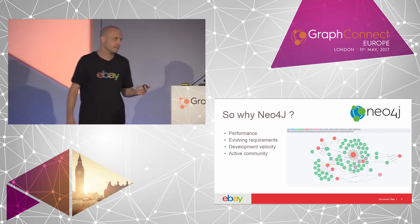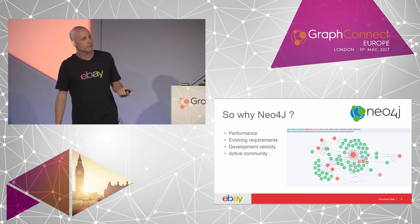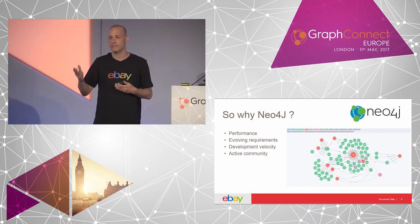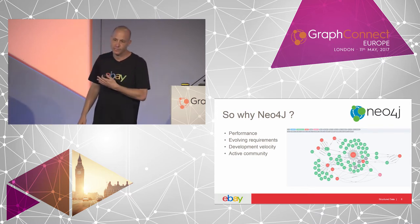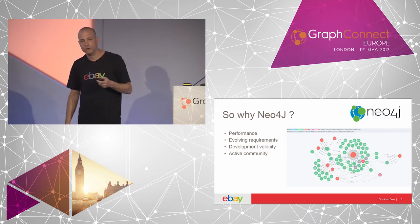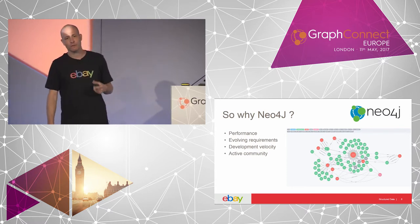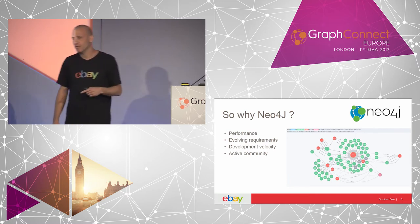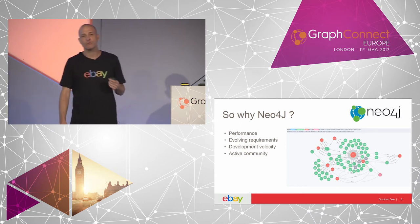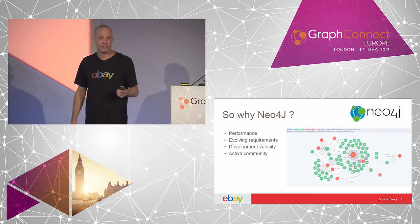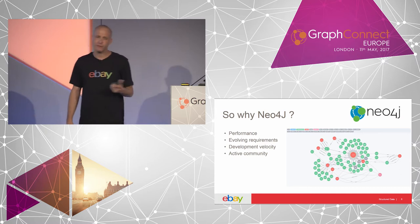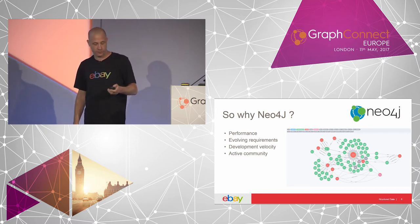So why did we choose Neo4j? First, performance. In the end, we are going to have more than nine business entity types. We need to find all the categories related to aspects and values that have some kind of display name. We found that the best way to solve logical joins is through traversal, and Neo4j executes traversals very fast. Second, we have a lot of evolving requirements. The natural flexibility in Neo4j enables us to react very fast to changes without affecting any consuming layer of the EMP, and we don't need to go through data migration projects. Third is development velocity — it's easy to onboard someone new, teach Cypher, and have them productive very fast. And of course, there's a great community for assistance.